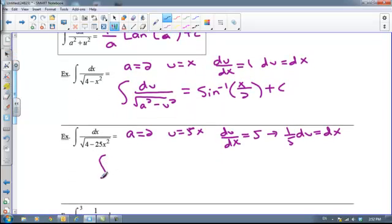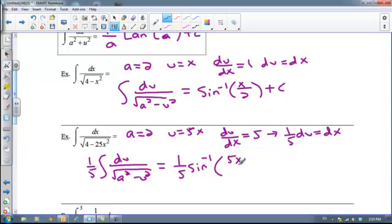So we are going to have the integral of 1 5th du over the square root of a squared minus u squared. So we get it in that form, and we just apply our formula. So this is 1 5th times the arc sine of u over a, where u was 5x, and a was 2. Plus c.